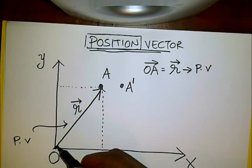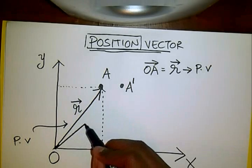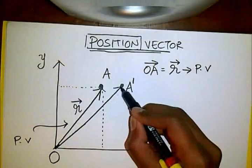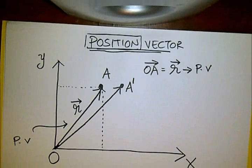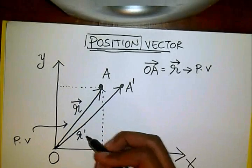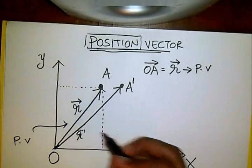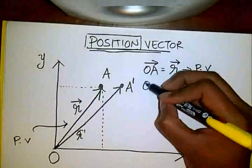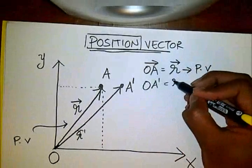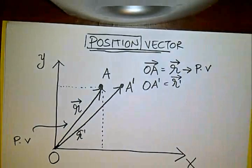What would our new position vector be? Well, the same thing. It's going to be from the origin to our new point. So that, let's call it R dash, vector R dash. So R dash, or OA dash, is our new position vector.